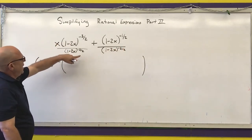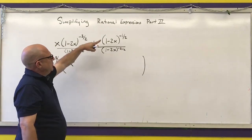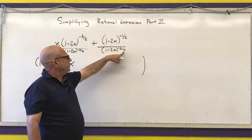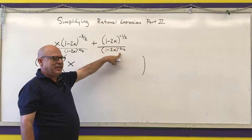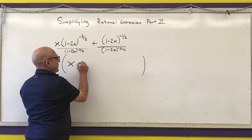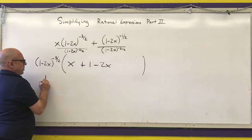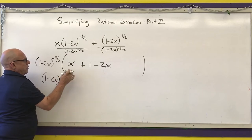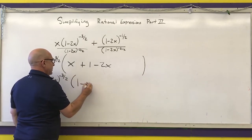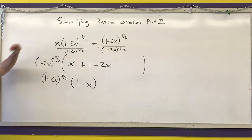Let's see what we have left. Any term divided by itself is 1, so the first term just leaves a 1 — actually, just an x. Then (1 minus 2x) to the negative one-half divided by (1 minus 2x) to the negative three-halves: subtracting exponents gives negative one-half minus negative three-halves, which equals 1. So that term becomes (1 minus 2x) to the first power. Combining: 1x minus 2x equals negative x plus 1, which is (1 minus x). So the fully factored form is (1 minus 2x) to the negative three-halves times (1 minus x).